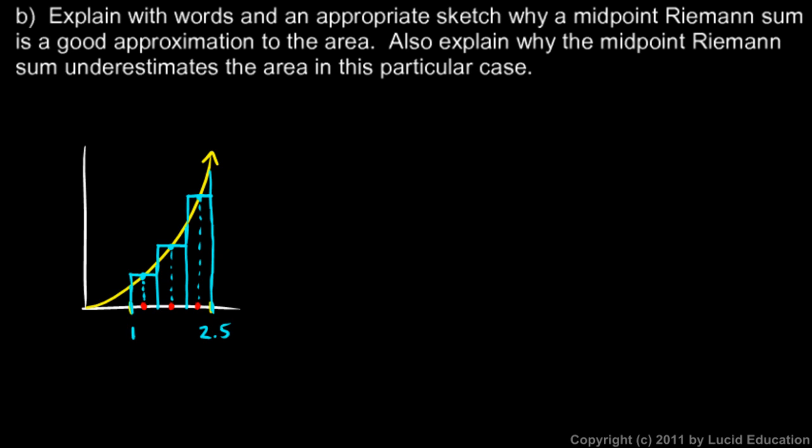Okay, now to explain with words why the midpoint Riemann sum is a good approximation to the area. The explanation is this. This rectangle, the top of this rectangle, does not exactly match the top of the curve. But notice this part of the rectangle here that's up above the curve causes the midpoint Riemann sum to overestimate the area.